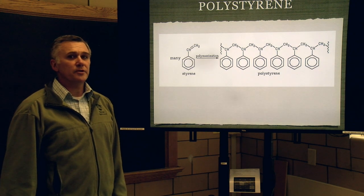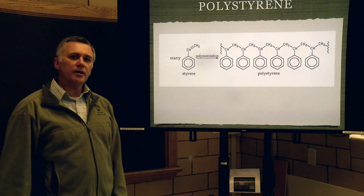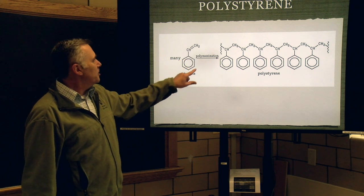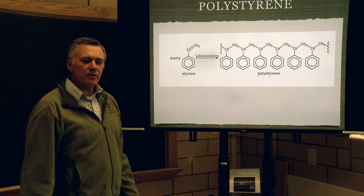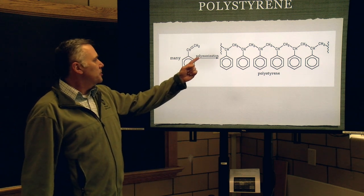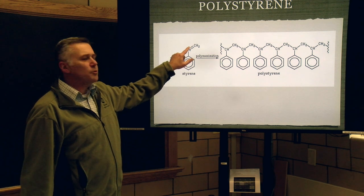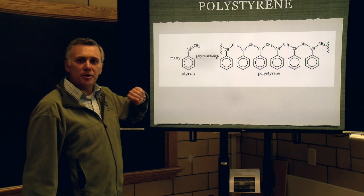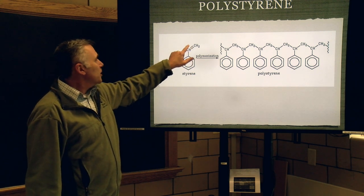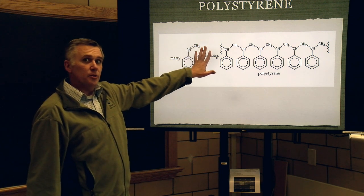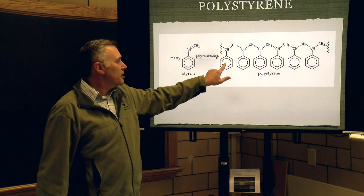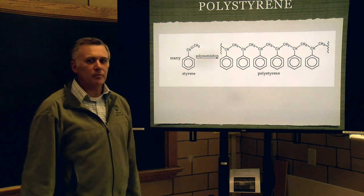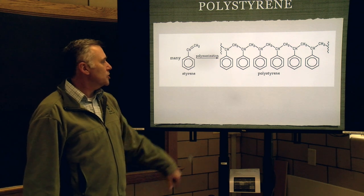Two parts to this experiment. The first part, we're going to make polystyrene from styrene. Styrene has a benzene ring and a carbon-carbon double bond — it's an alkene. We'll use an initiator, benzoyl peroxide, to initiate polymerization via a radical reaction, with single-barbed arrows, where the double bond breaks. One electron goes one direction, one the other, and the molecule next to it does the same thing, making polystyrene — a long chain of repeating units. Hence the term polymerization.